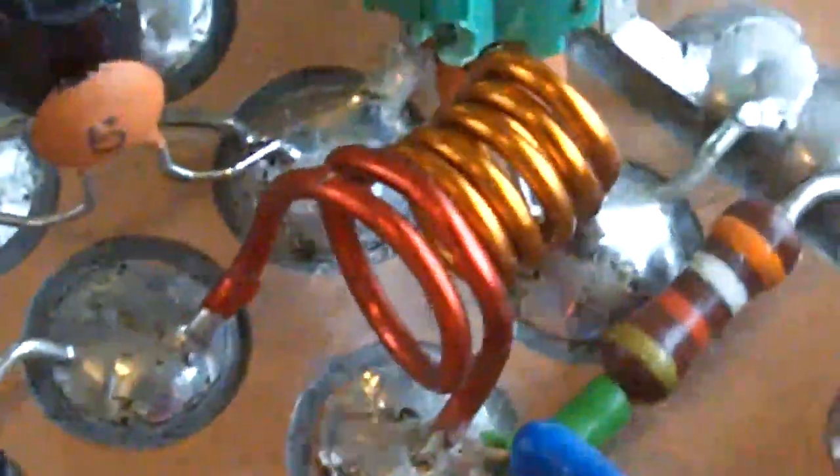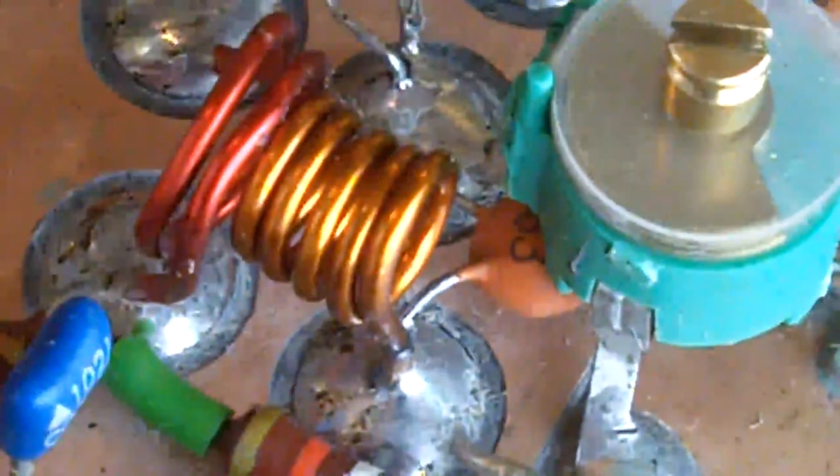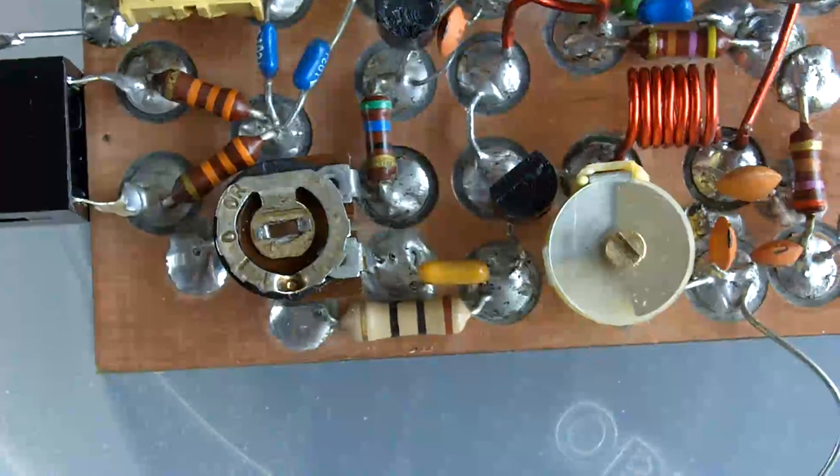The VHF tuning coil is the copper collared one, and the second stage is inductively coupled via those two red turns that are immediately adjacent.